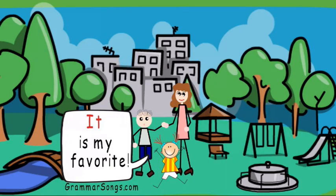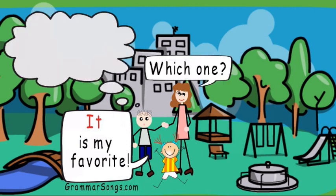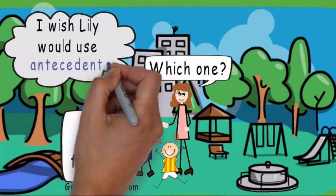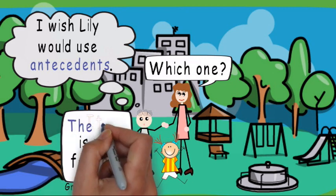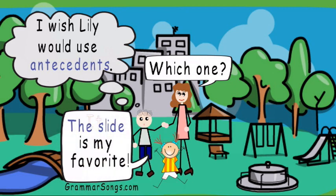'It is my favorite.' Which one? Without an antecedent, your listener doesn't know what you mean. Instead, say: 'The slide is my favorite.' Now your listener understands exactly what you're referring to.